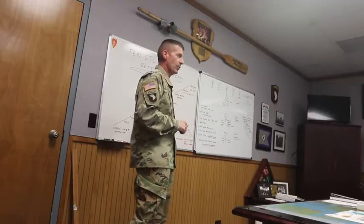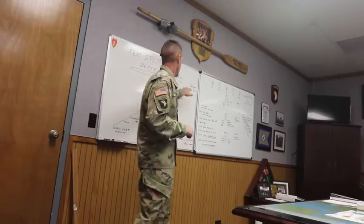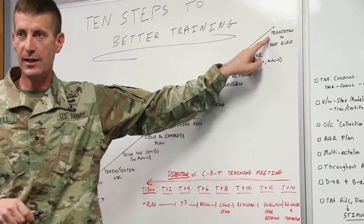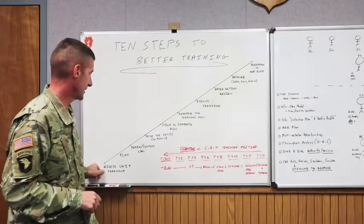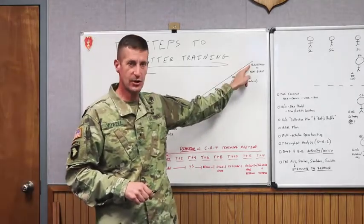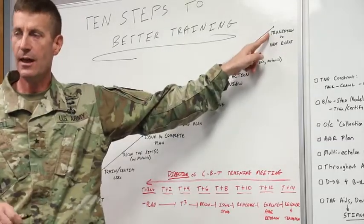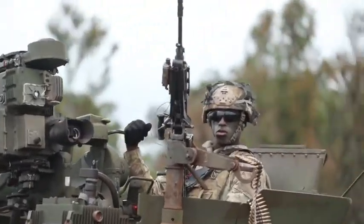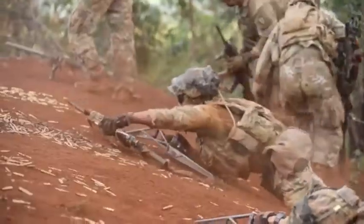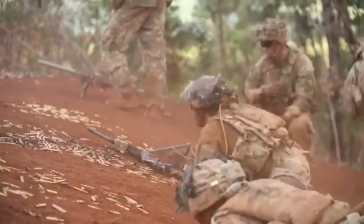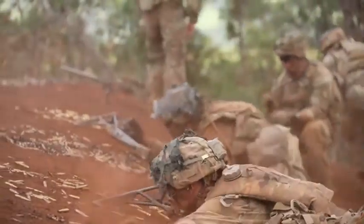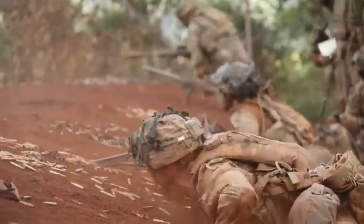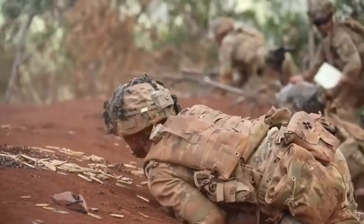This brings me to the last point on the 10-step model: the transition is often overlooked. Think of this model — from assessing all the way through training to transitioning to the next event — not as a linear model, but as a circular process. There are times in the calendar where you may be training and certifying leaders while simultaneously developing the next plan down the road.